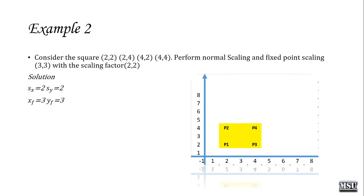Let's discuss an example. Consider a square with vertices 2 comma 2, 2 comma 4, 4 comma 2, and 4 comma 4. Perform both normal scaling and fixed point scaling with fixed point 3 comma 3 and scaling factor 2 comma 2. So SX equals 2, SY equals 2, XF equals 3, and YF equals 3. Since the scaling factor is greater than 1, the size of the square must be increased.